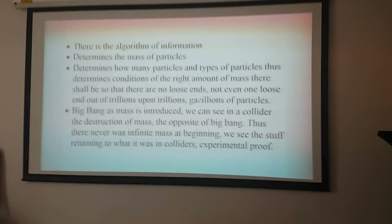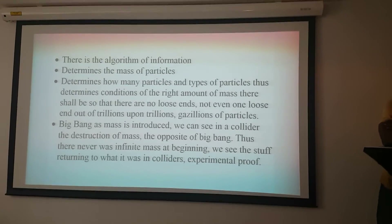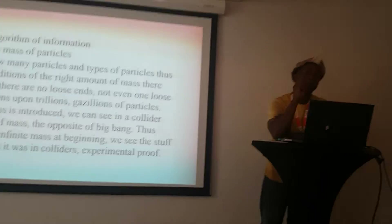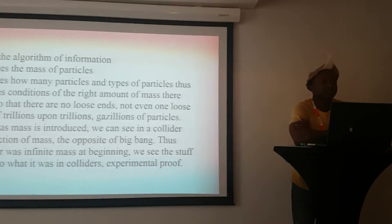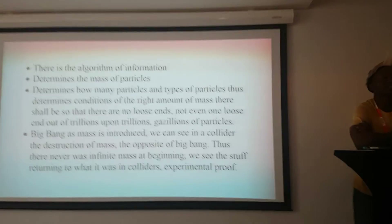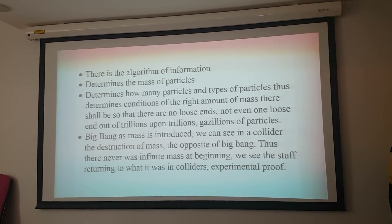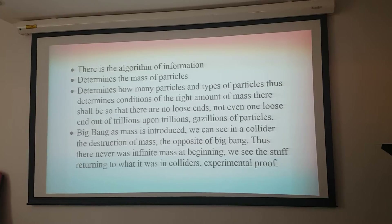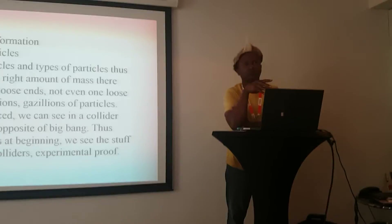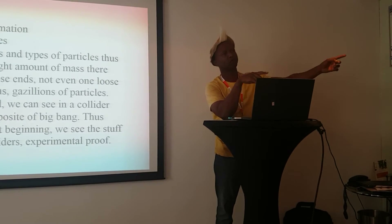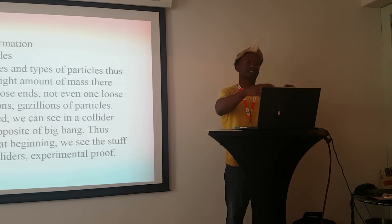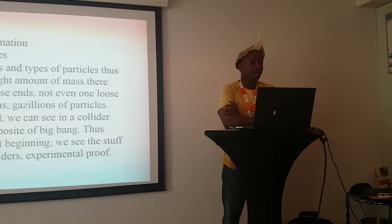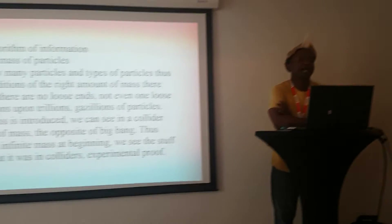There is the algorithm of information. It determines the mass of particles, and the mass of a particle is what gives it its characteristics. It determines how many particles and types of particles, and thus determines the right amount of mass. With not even one loose end out of trillions, because there are no loose ends we don't see gluons flying around — we see photons flying around. So everything was given its characteristics right at the beginning.